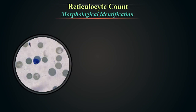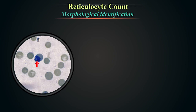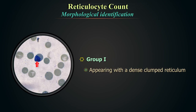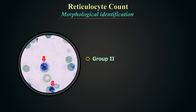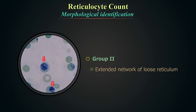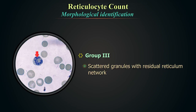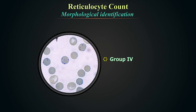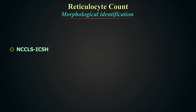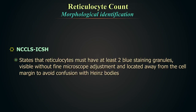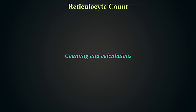Morphological identification: examining microphotographs, we can identify reticulocytes at different maturation stages. A Group 1 reticulocyte appears with a dense clumped reticulum. A Group 2 reticulocyte shows an extended network of loose reticulum. A Group 3 reticulocyte shows scattered granules with residual reticulum network. A Group 4 reticulocyte shows scattered granules but no residual reticulum. The NCCLS/ICSH definition requires at least two blue staining granules visible without fine microscopic adjustment, located away from the cell margin to avoid confusion with Heinz bodies.